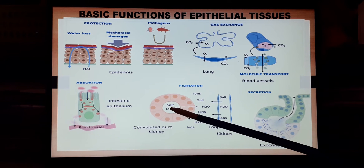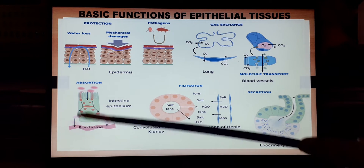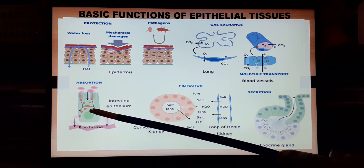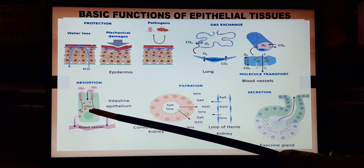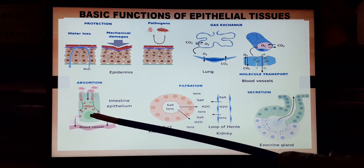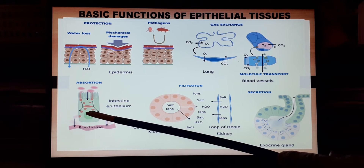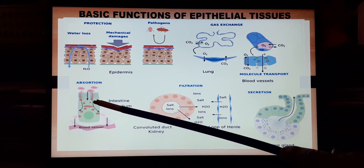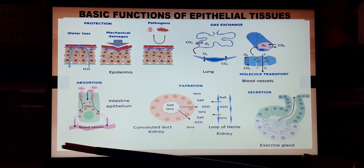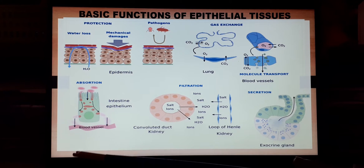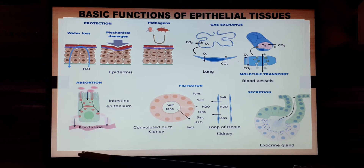In the alimentary canal, in the intestine region, epithelial tissue is responsible not only for secretion but also for the absorption of digested food, so that it can be evenly distributed throughout the body.